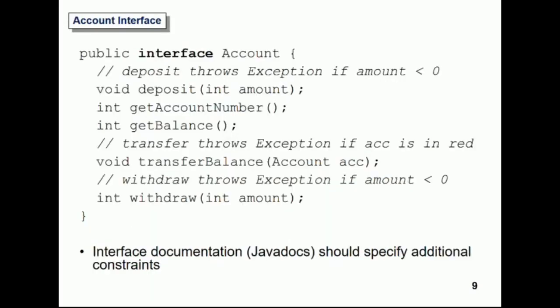This is what our account interface looks like — that's the interface right at the top level. These are our methods: we've got deposit, get account number, get balance, transfer balance, and withdraw. Notice, as we saw in the previous example, there's no implementation within the interface. You're just declaring what methods anybody implementing this interface needs to provide.